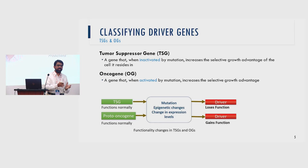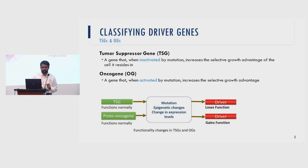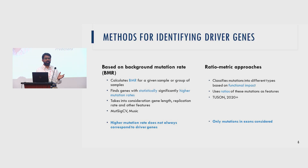Among driver genes, it's also important to view them as either tumor suppressor genes or oncogenes, as this gives insight into the mechanism of how cancer progresses. There are loss-of-function mutations or gain-of-function mutations that ultimately decide the progression of cancer in a given patient.